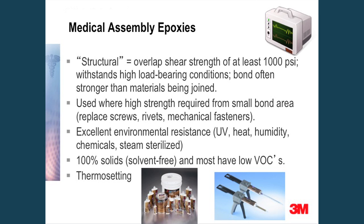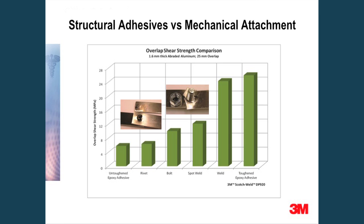In addition, the superior temperature resistance of this class of adhesives makes them very suitable for applications requiring multiple autoclave exposures. This slide shows the overlap shear strength comparison of the epoxy adhesive and its superior performance to a rivet, a bolt, a spot weld, and a weld — tested using 1.6 millimeter thick aluminum material in an overlap shear test.